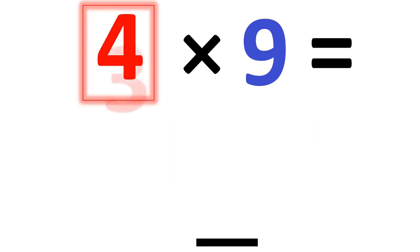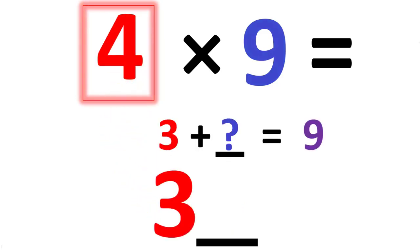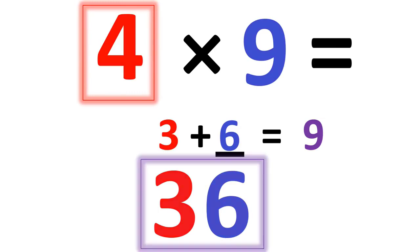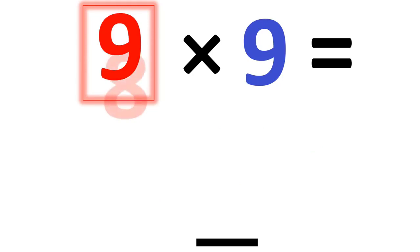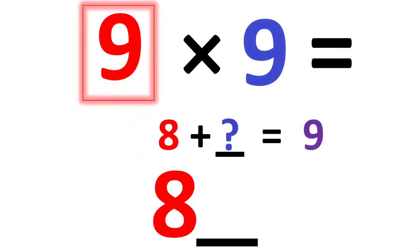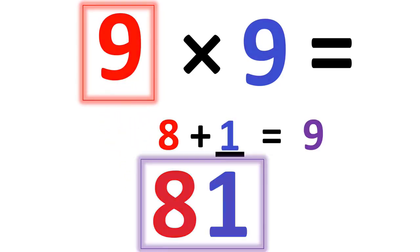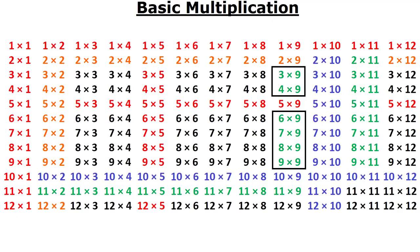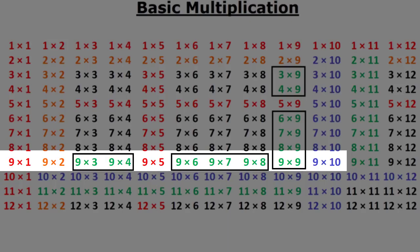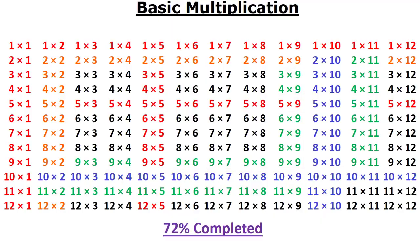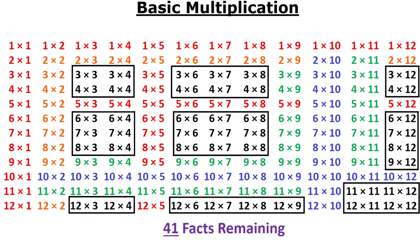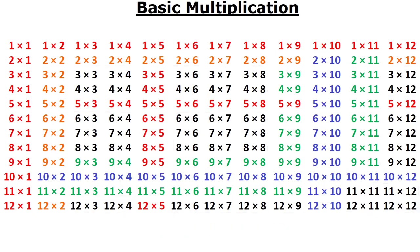4 times 9. 1 less than 4 is 3. 3 plus what number is 9? 6. So your answer is 36. And you can do that all the way up to 9 times 9 to get 81. So now that you know the answer to 2 times 9 to 9 times 9, you also know the reverse. You know 9 times 2 to 9 times 8. So after just learning 6 rules, you now know 103 multiplication facts.